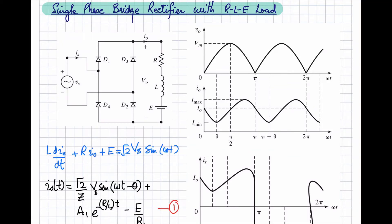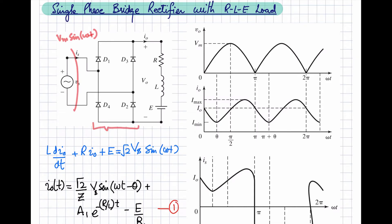In this video we will discuss the single phase bridge rectifier with RLE load — resistive, inductive, and battery source. The circuit diagram shows a sinusoidal supply, VM sin(ωt), applied to the bridge rectifier circuit. The load consists of a resistive part, inductive part, and a voltage source E, which may be a battery being charged or the back EMF of a DC motor.